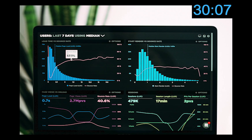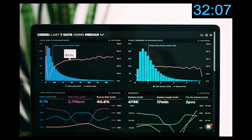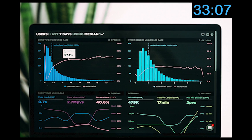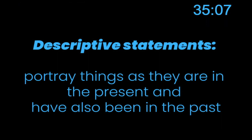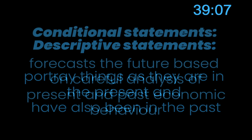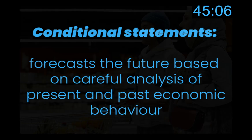Positive economics, on the other hand, deals with objective facts. It is primarily concerned with two types of statements: descriptive statements, which portray things that are in the present and have also been in the past, as well as conditional statements, which forecast the future based on careful analysis of present and past economic behavior.